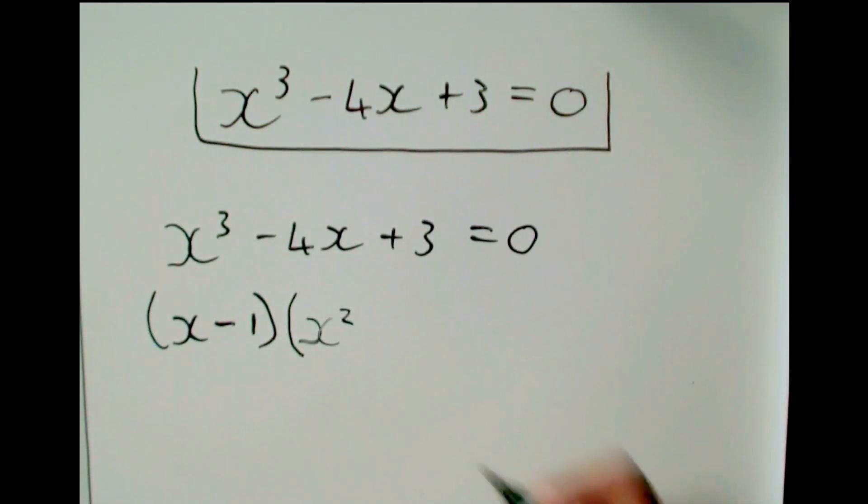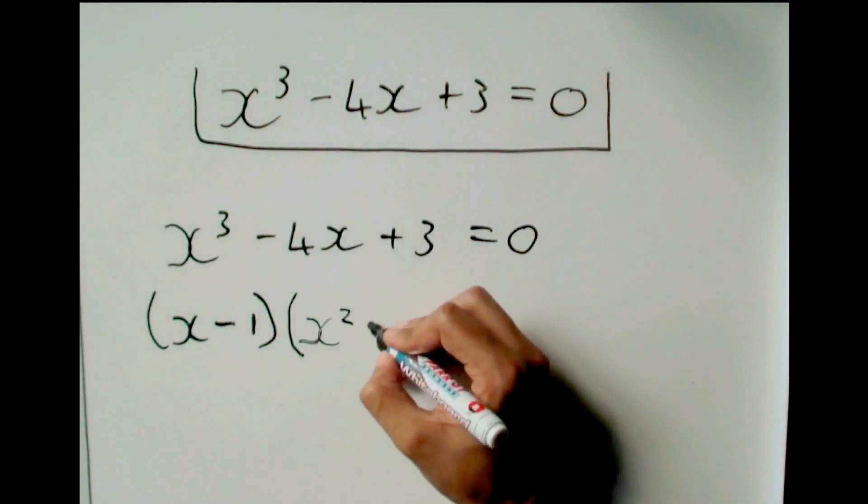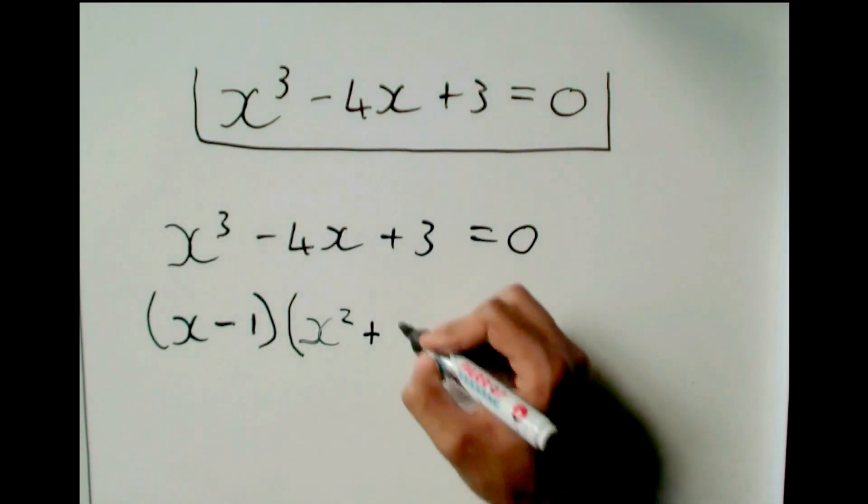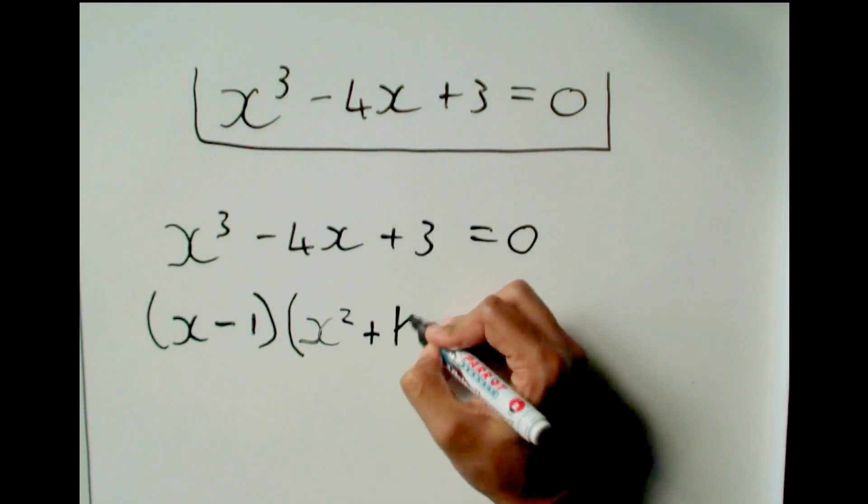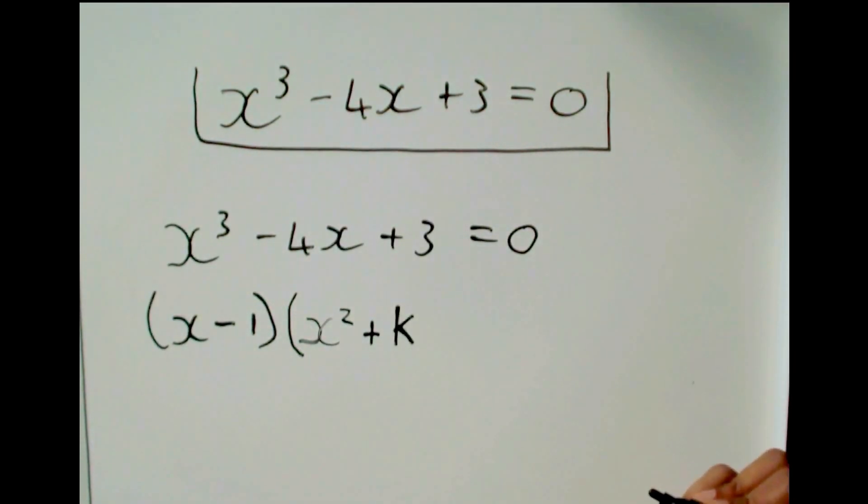This middle term, I do not know about. So what I am going to do is I am going to give it a placeholder. This is why it is called the Kx method. I am going to call that Kx. I know it should be an x because it will be x squared plus something x plus something. But I do not know what Kx. So I am going to call it K for now. And I am going to find out what it is later.